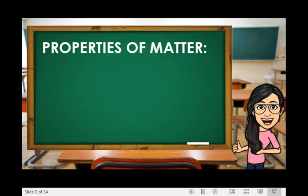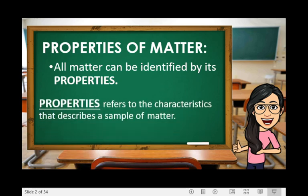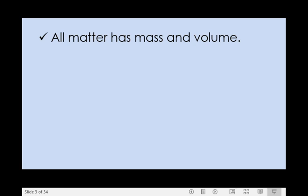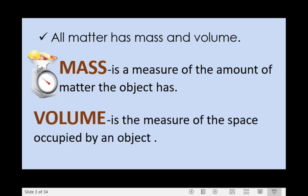In order for you to understand this concept, we'll be dealing with the properties of matter. All matter can be identified by its properties. Properties refer to the characteristics that describe a sample of matter. As we all know, all matter has mass and volume. Mass refers to the measure of the amount of matter the object has, and volume is the measure of the space occupied by an object.